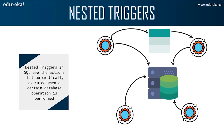You might be wondering in which scenario we can use a nested trigger. Continuing from the earlier scenario, Anna sends an email for every new customer added to the company's database. Now, what if she wishes to keep track of the number of customers to whom the email was sent? Anna needs to create a nested trigger to keep track of the count along with sending an email. So that was all about the syntax of a trigger.